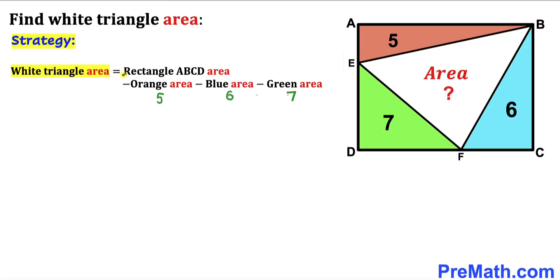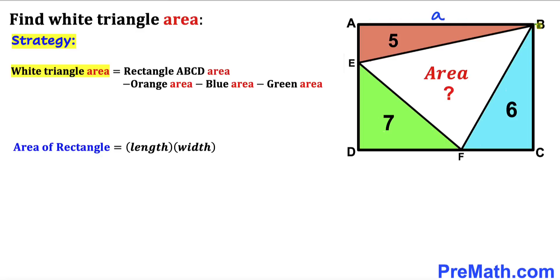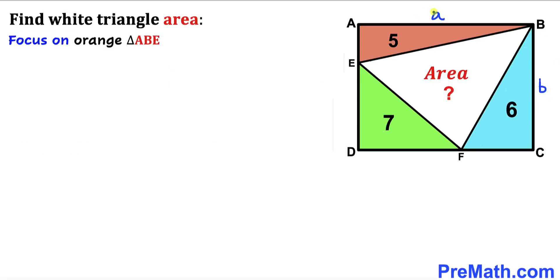Our only task now is to calculate the area of rectangle ABCD. Recalling the rectangle area formula: area equals length times width. Let me label the length of this rectangle as lowercase a and the width as lowercase b.